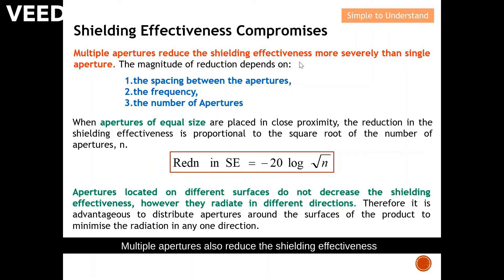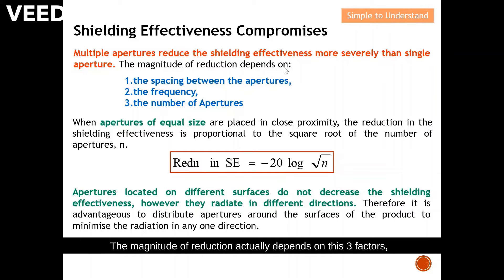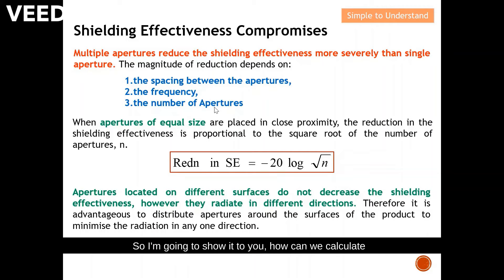Multiple apertures also reduce the shielding effectiveness more severely than a single aperture. The magnitude of reduction depends on three factors: the spacing between the apertures, the frequency, and the number of apertures. I'm going to show you how to calculate how the number of apertures affects shielding effectiveness.